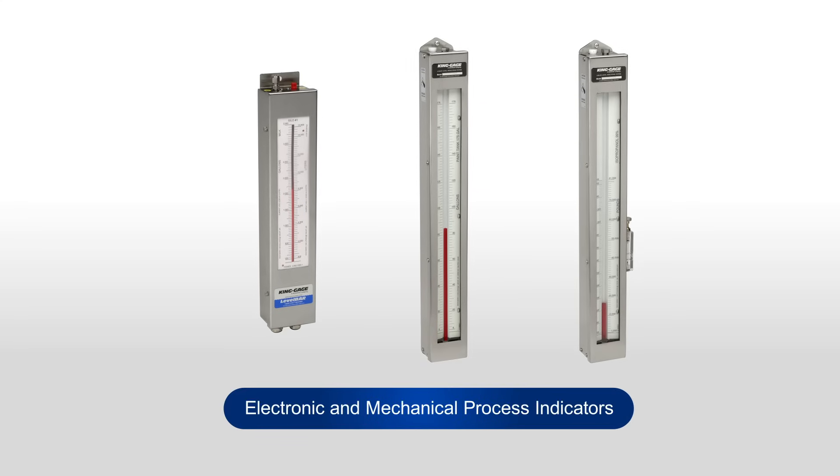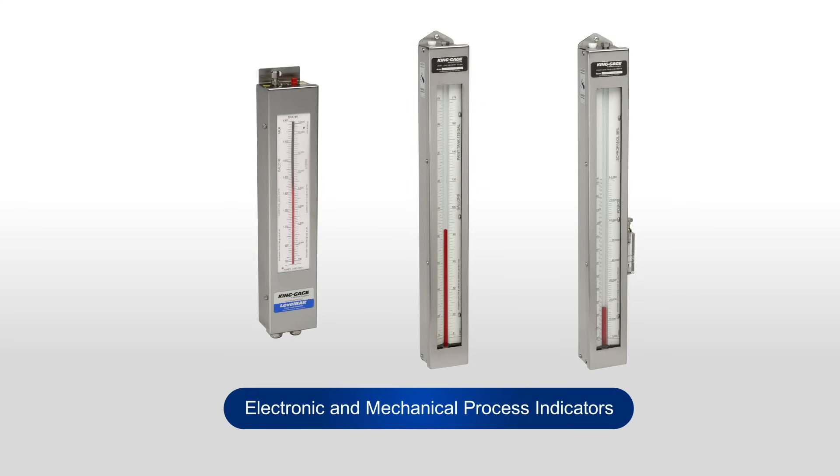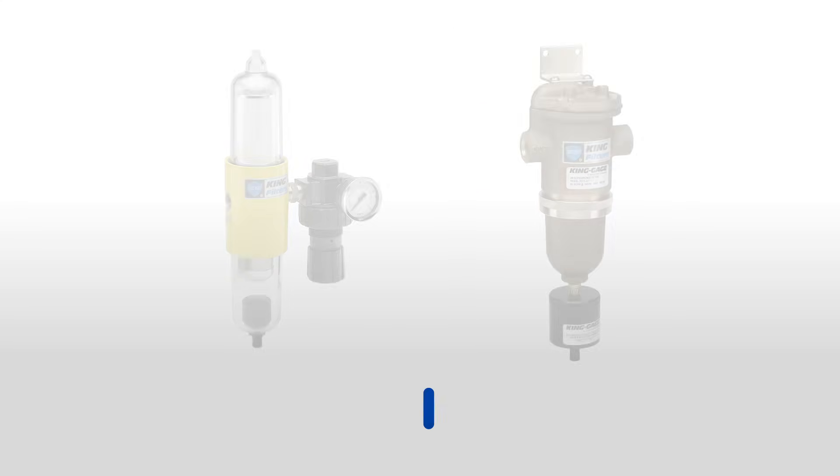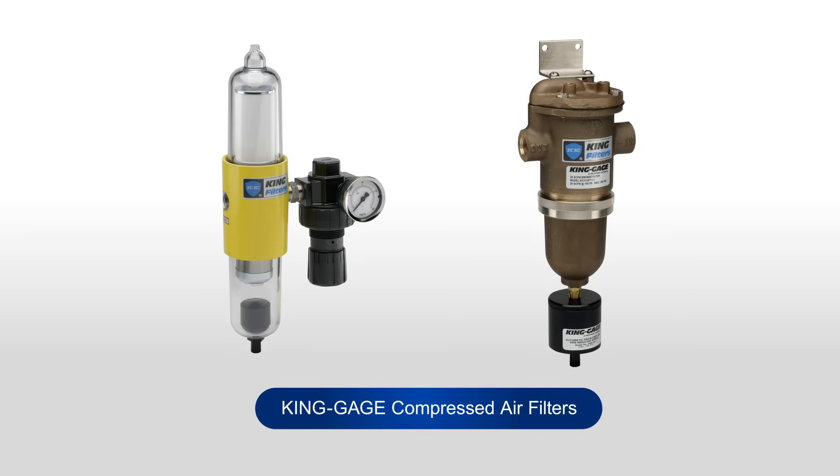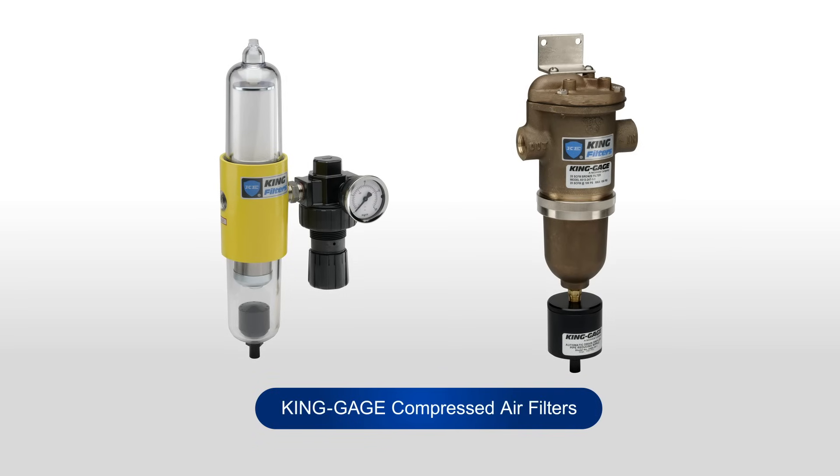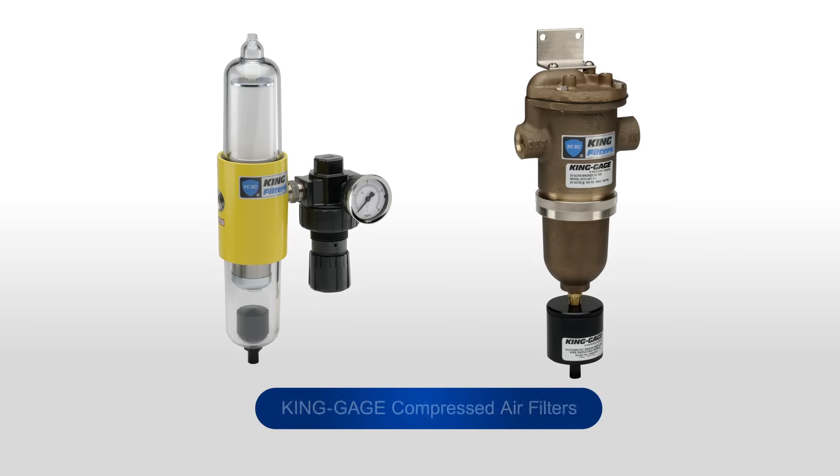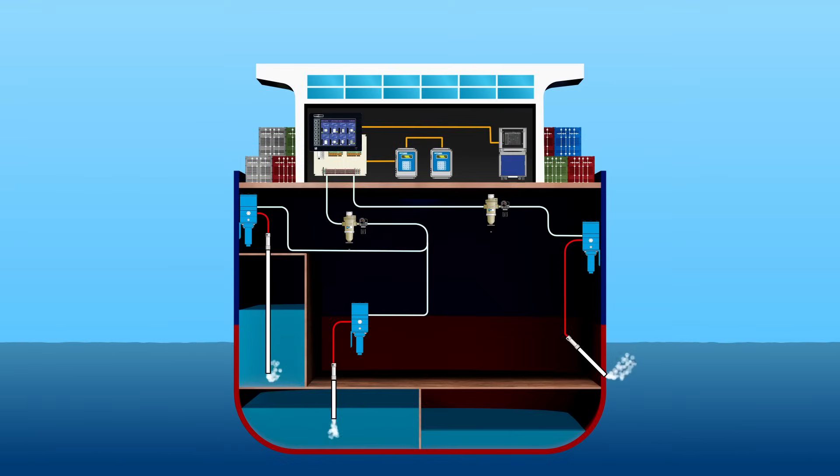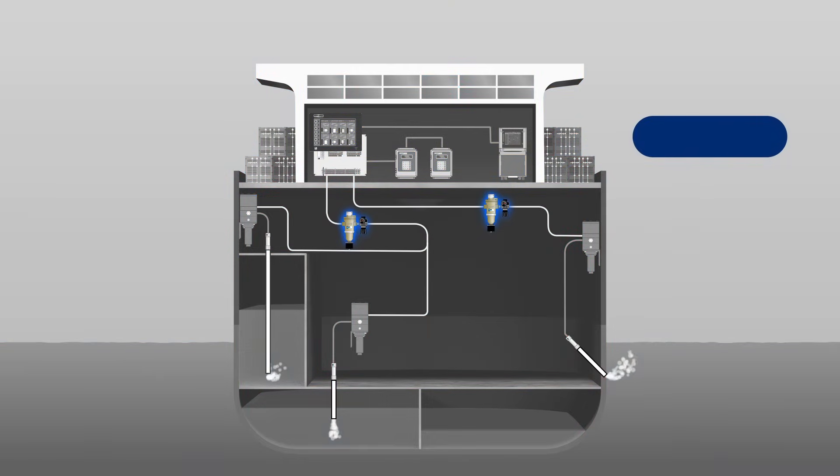Additional local display options include King Gauge electronic and mechanical process indicators. Pneumatic components and instrumentation will be more dependable and require less maintenance when supplied ultra-clean air through King Gauge compressed air filters. Installed upstream of purge control level transmitters, they provide complete filtration and point-of-use supply pressure regulation.